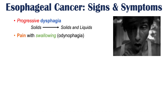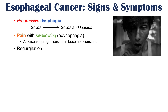There can also be pain with swallowing, called odynophagia. This pain initially occurs only during swallowing, but as the disease progresses, it becomes constant — there can be constant retrosternal pain. Regurgitation can also occur, where a patient coughs up undigested food because it hasn't yet reached the stomach.